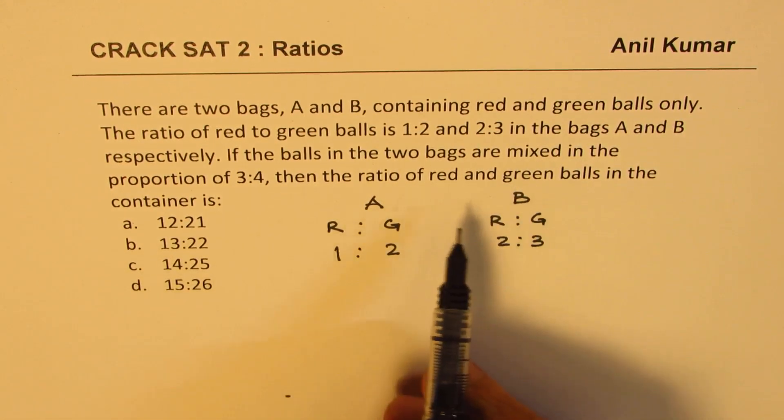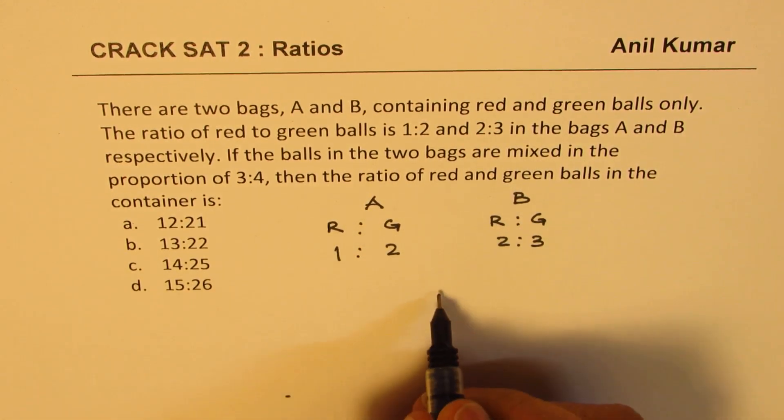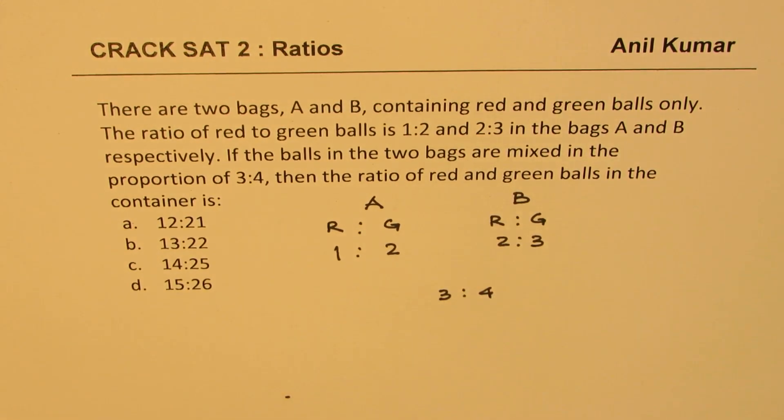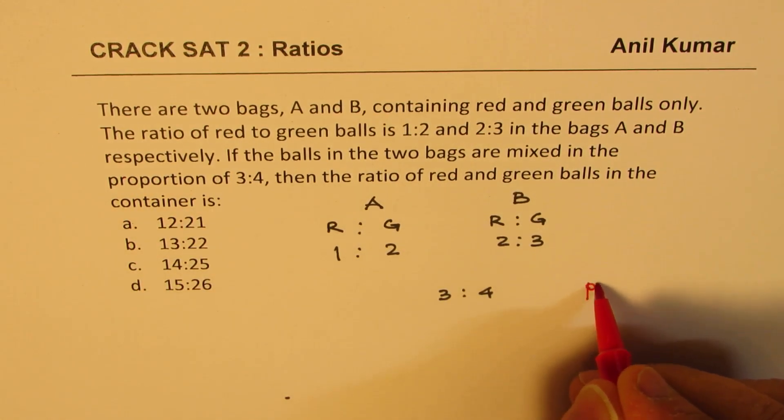Now we want to mix them in the ratio of 3 is to 4 and then find what is the ratio of red to green balls. How do we do that? Now when we say that they are mixed in proportion, so the word here is proportion.